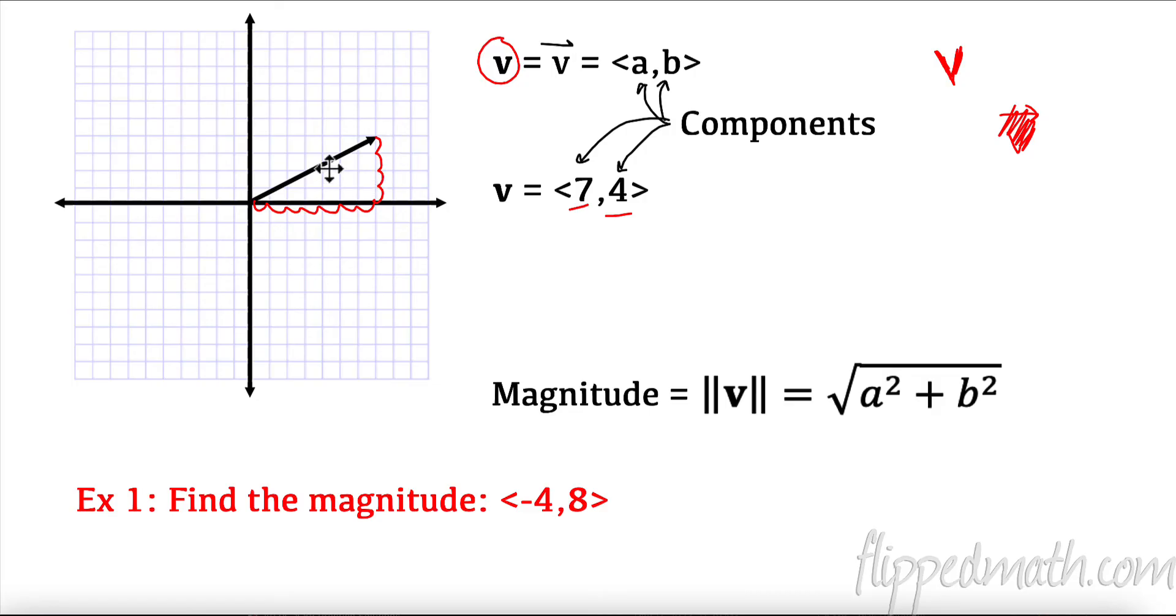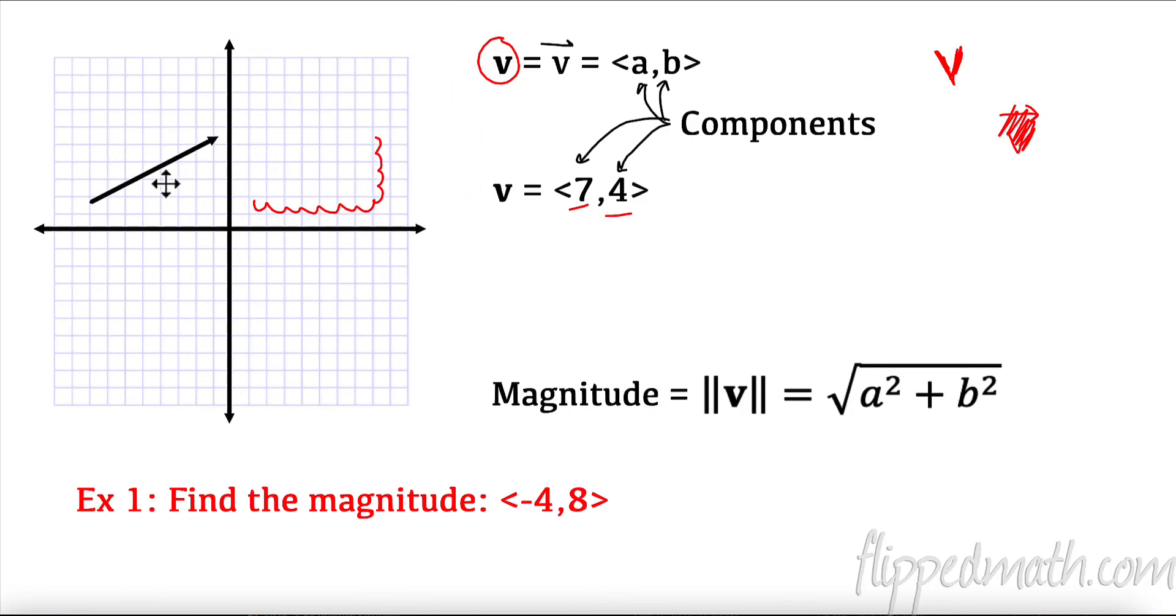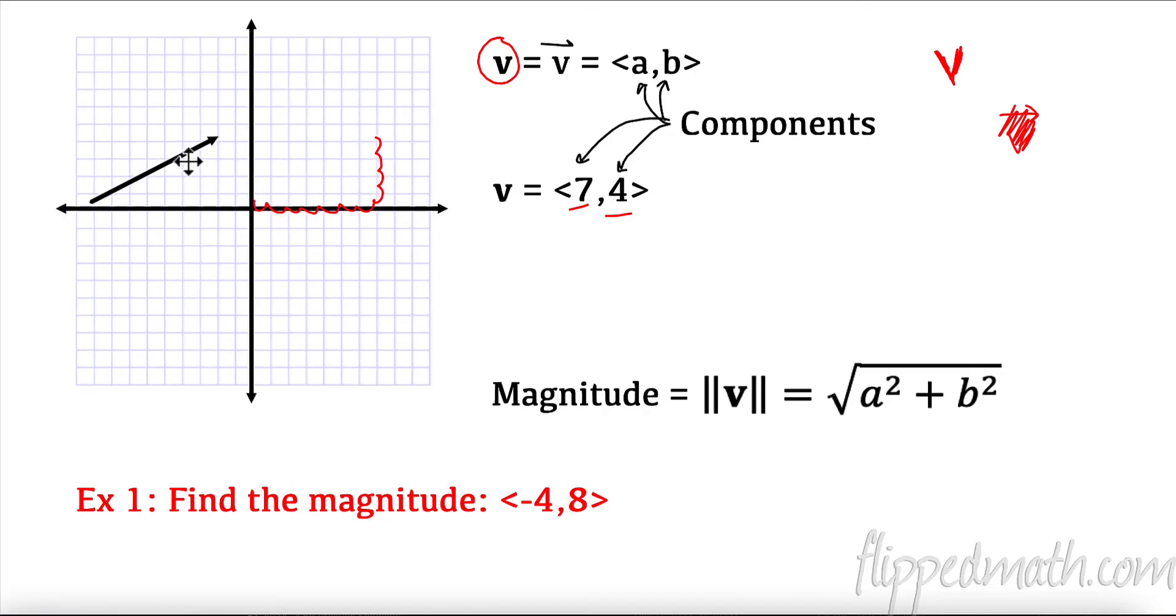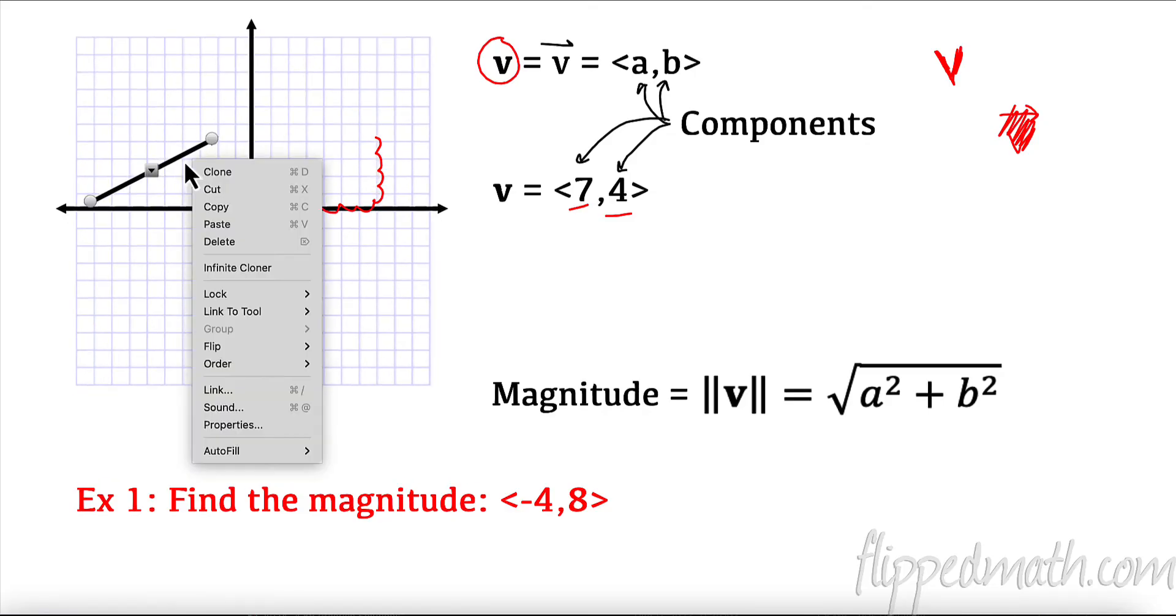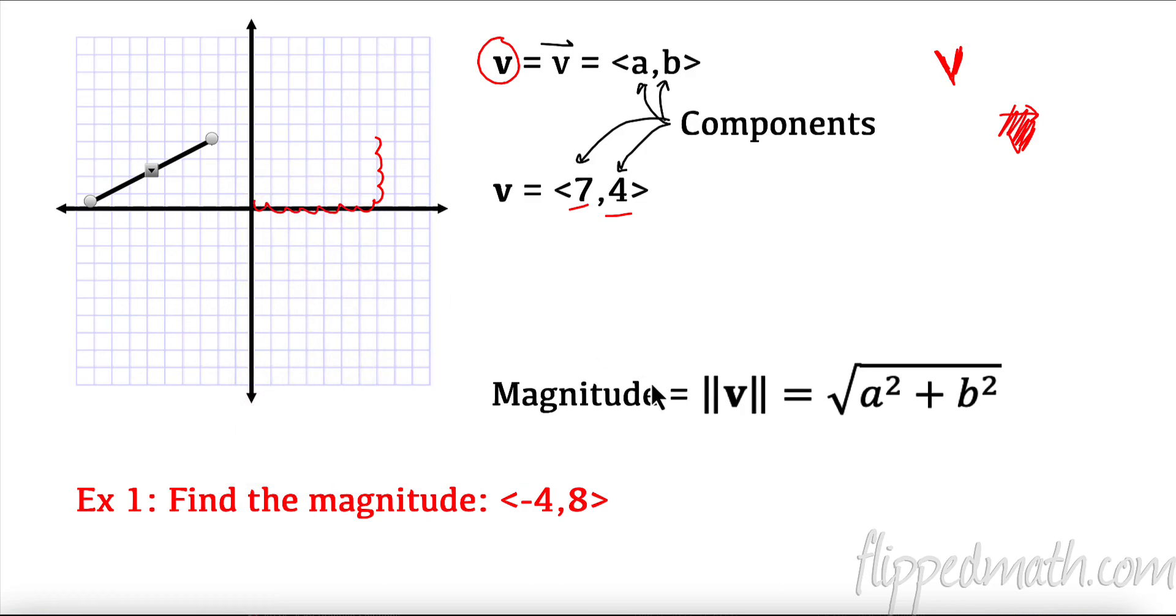Now, here's something very important for you to understand. This vector doesn't always have to start at the origin. It could start over here. It could start anywhere. Like, it's always going to go over 7 up 4. That's what the vector's always going to do. Now, the thing about this is we can calculate its magnitude, and we can do that very simply.